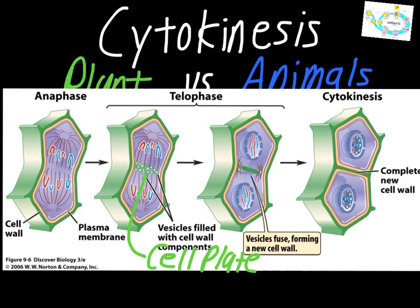The vesicles fuse, forming a new cell wall — you can see it happening there. And then during cytokinesis in plant cells, that new cell wall is complete.